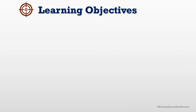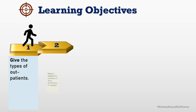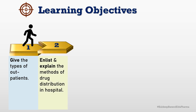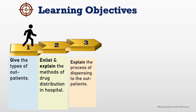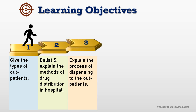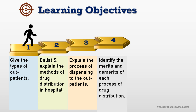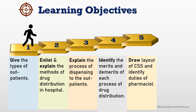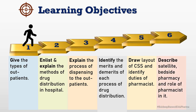The learning objectives of this learning dialogue are: give the types of outpatient, enlist and explain the methods of drug distribution in hospital, explain the process of dispensing to outpatients, and identify the merits and demerits of each process of drug distribution. These learning objectives were covered in our Part 1. The additional learning objectives for Part 2 are: draw the layout of central sterile services and identify duties of pharmacist, and describe satellite bedside pharmacies and the role of pharmacist in it.